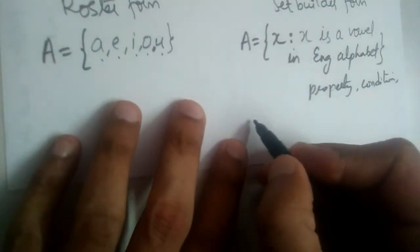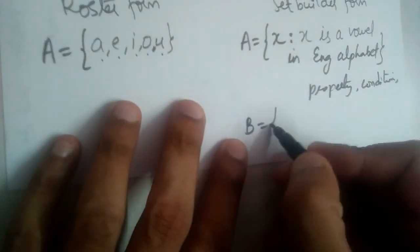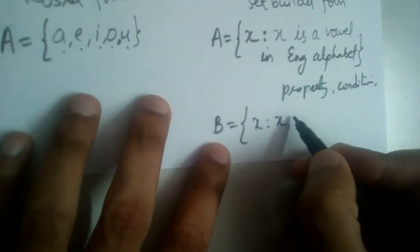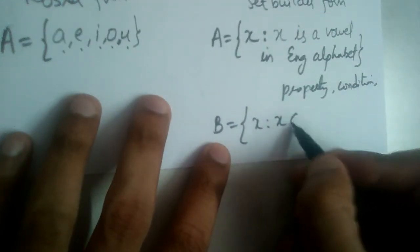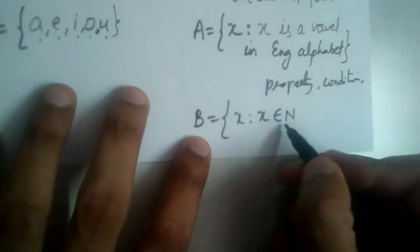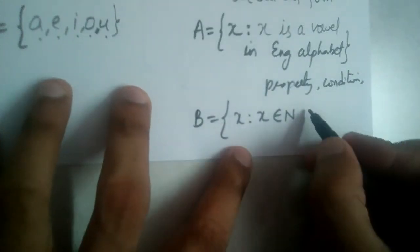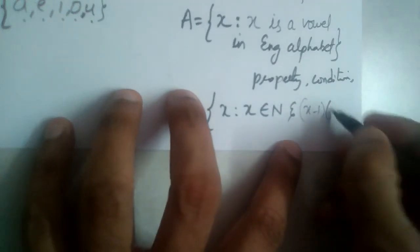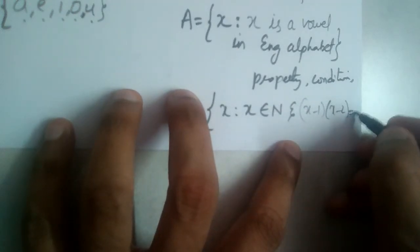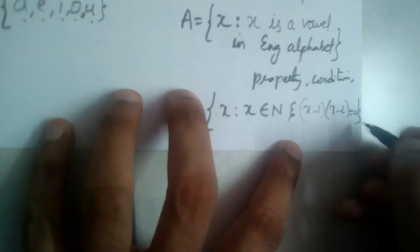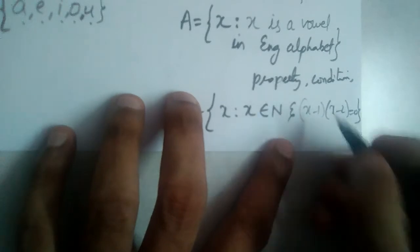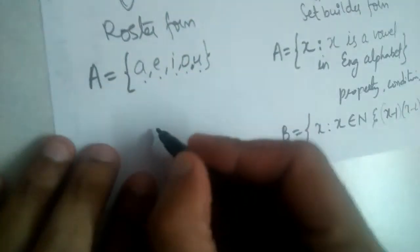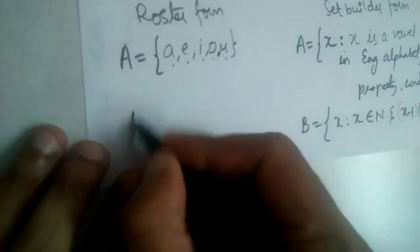Let me give one more example. Let B = {x : x belongs to natural numbers and (x−1)(x−2) = 0}. This symbol represents 'belongs to', and x must also satisfy the condition (x−1)(x−2) = 0.